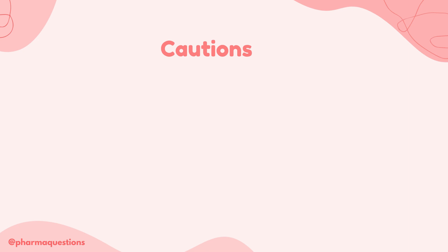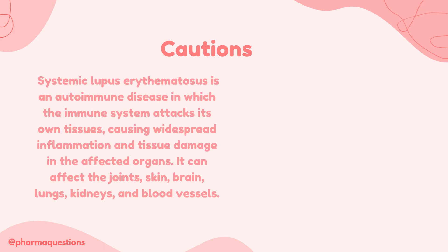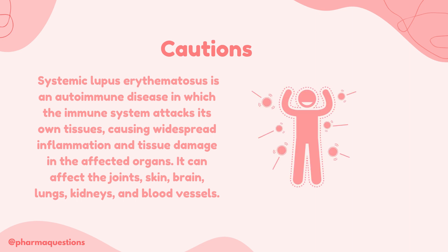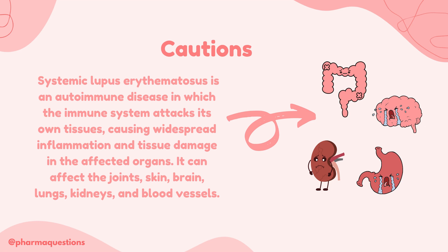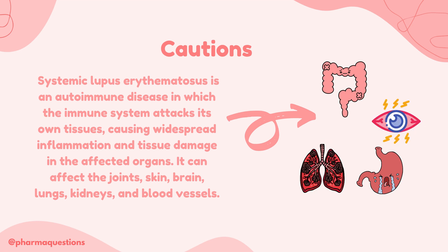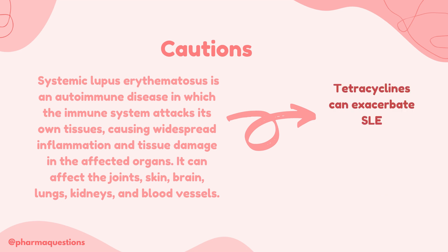Another caution: systemic lupus erythematosus is an autoimmune disease in which the immune system attacks its own tissues, causing widespread inflammation and tissue damage in the affected organs. It can affect the joints, the skin, the brain, the lungs, amongst other organs. Tetracyclines should be used with caution in people with systemic lupus erythematosus as they can exacerbate the disease.